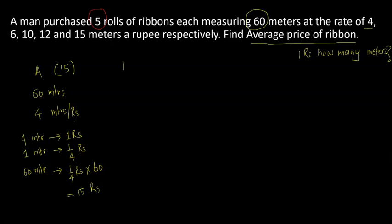Now, what about roll B? Again, the length is the same, 60 meters. I have been given a price of 6 meters per rupee, and the total cost of the roll would be 60 by 6. Same logic you can see on the left, and that is going to be available for 10 rupees. So the cost of roll B is 10.